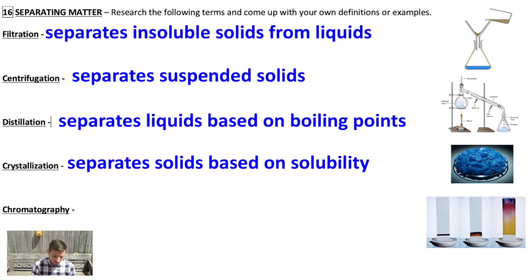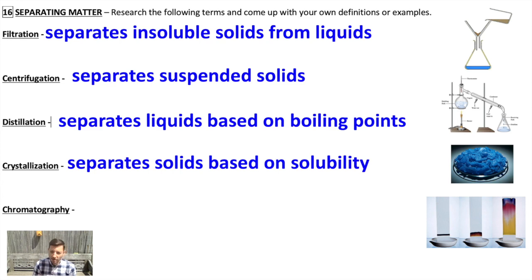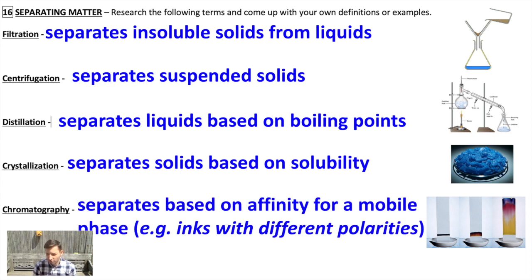So these are all techniques for separating things and most of these you've probably had a little bit of experience with. What you might not have seen that often is chromatography and that's a very useful one. It separates almost all kinds of substances based on their affinity for what we call a mobile phase. Actually it's a difference in affinity for a mobile phase versus a stationary phase. And I have a picture on your notes there that just shows ink chromatography working its way up a piece of paper by capillary action.